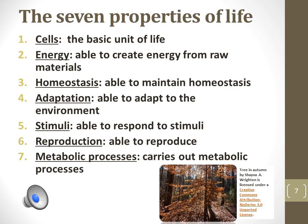Third is the ability to maintain homeostasis, or relatively constant internal temperature despite external changes — think of our body's ability to maintain an average temperature despite being in cold or hot weather. Fourth is the ability for the organism or living system to adapt to the environment. Fifth is the ability to respond to stimuli in their environment. Sixth is the ability for the living organism or system to reproduce. Seventh is the ability for the organism to carry out metabolic processes, which are the chemical reactions in the organism.